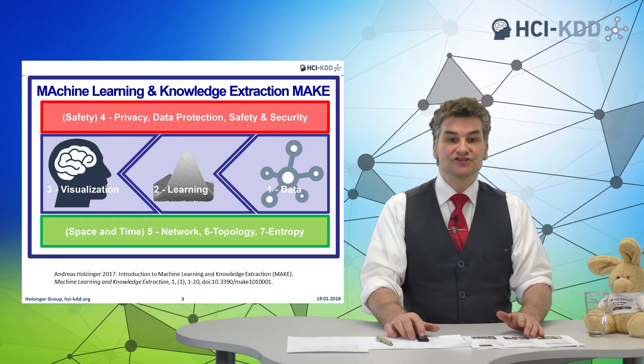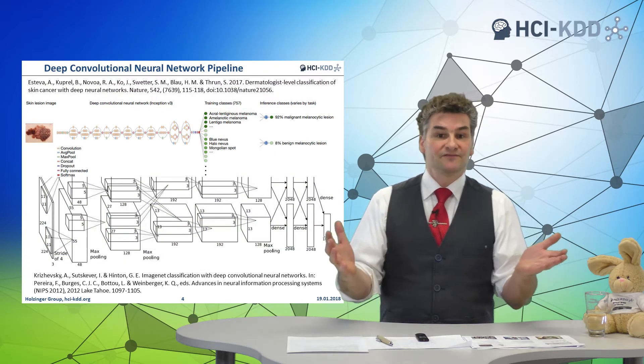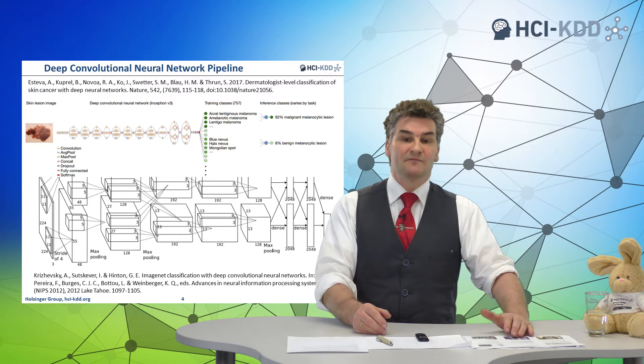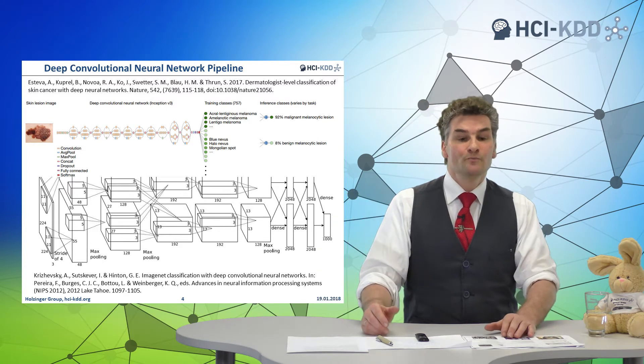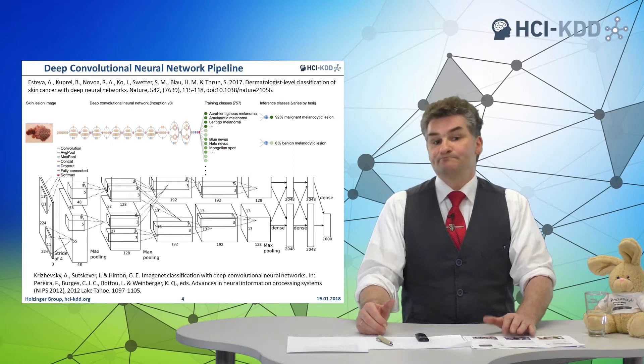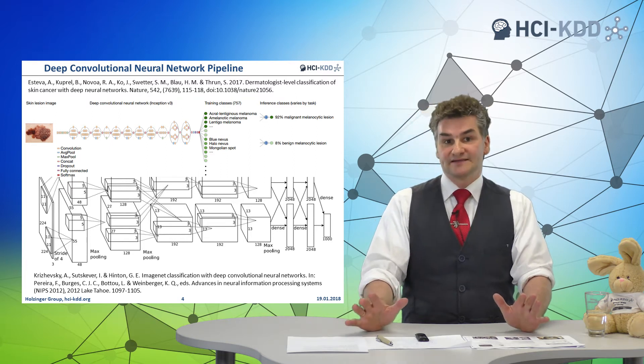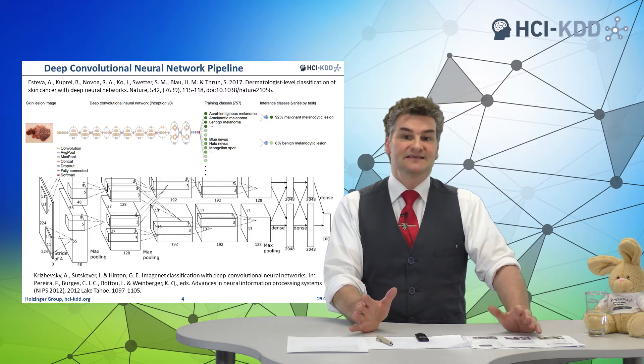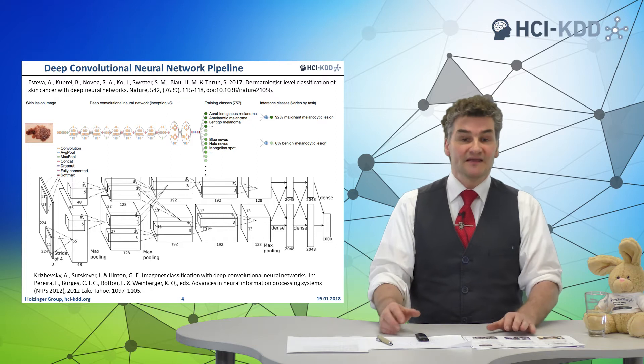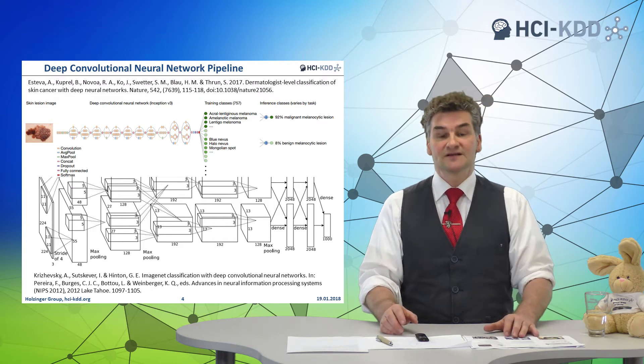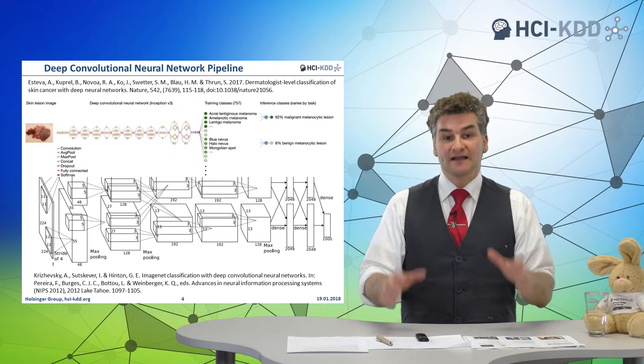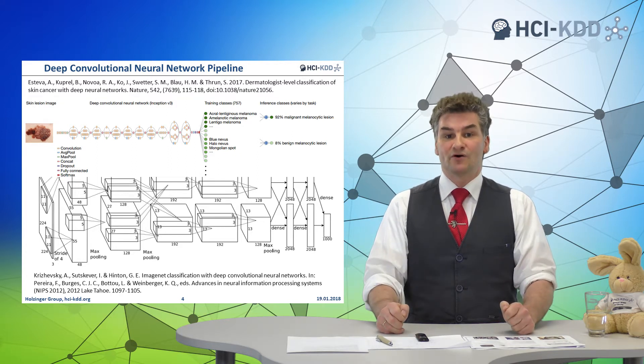To date, machine learning has impressive results. For example, deep convolutional neural networks are bringing up super results, even at human level. But they have some drawbacks. One of these drawbacks is that they are considered black box approaches, besides being data hungry and very resource intensive, and they need much engineering work.